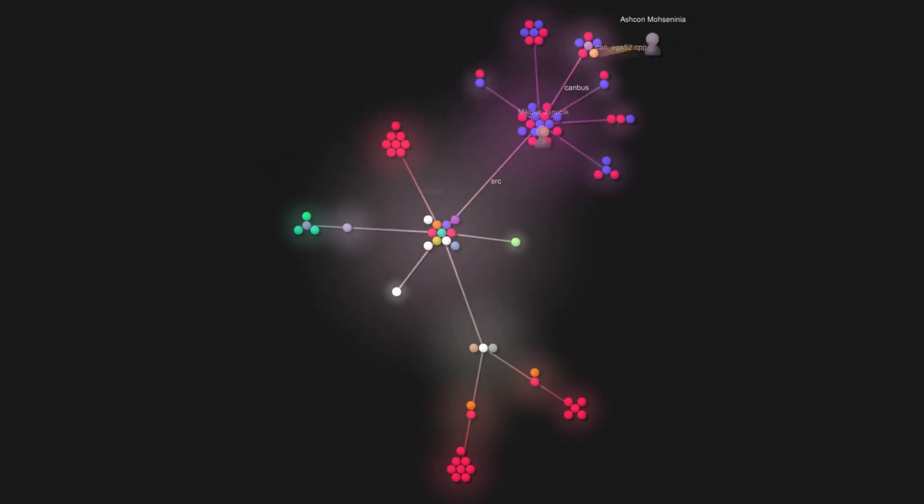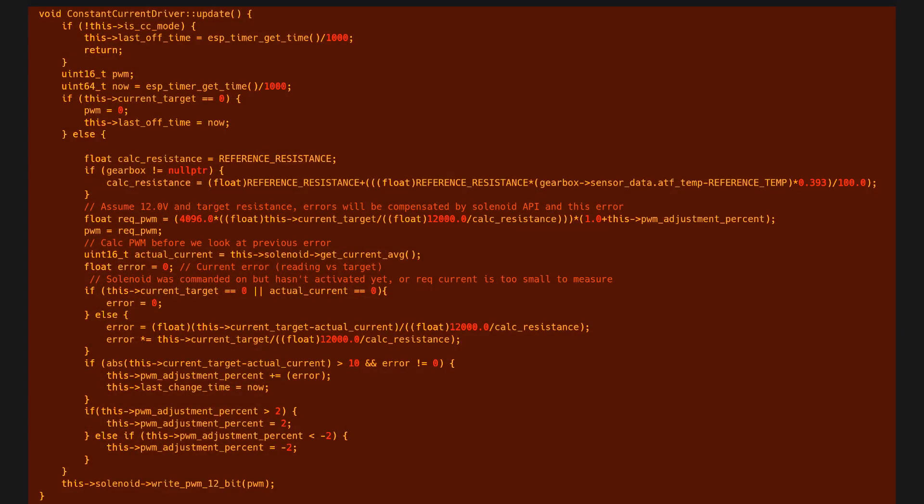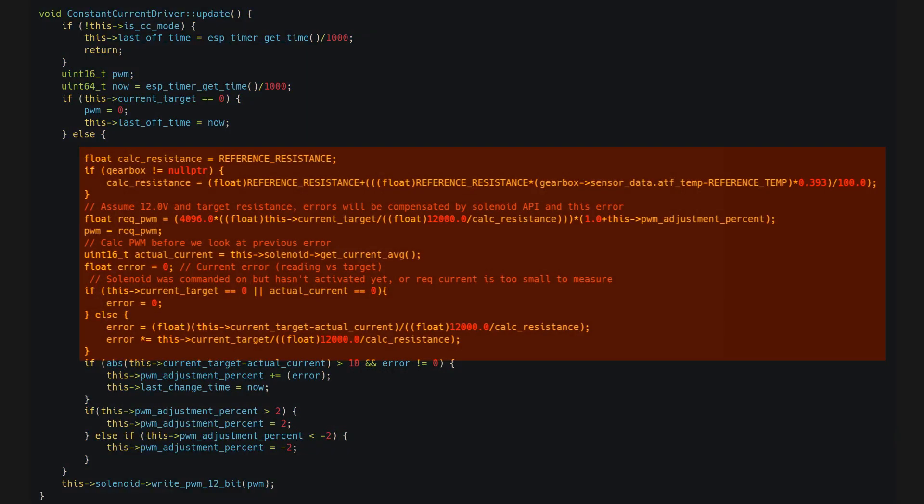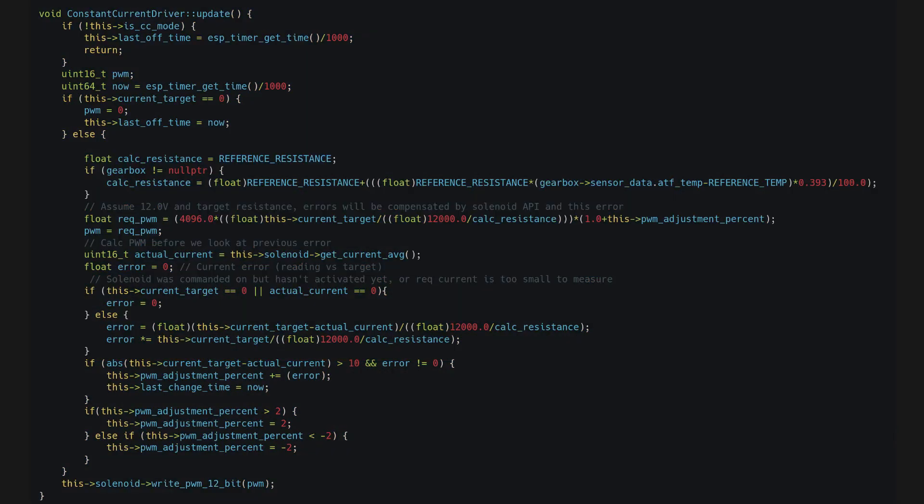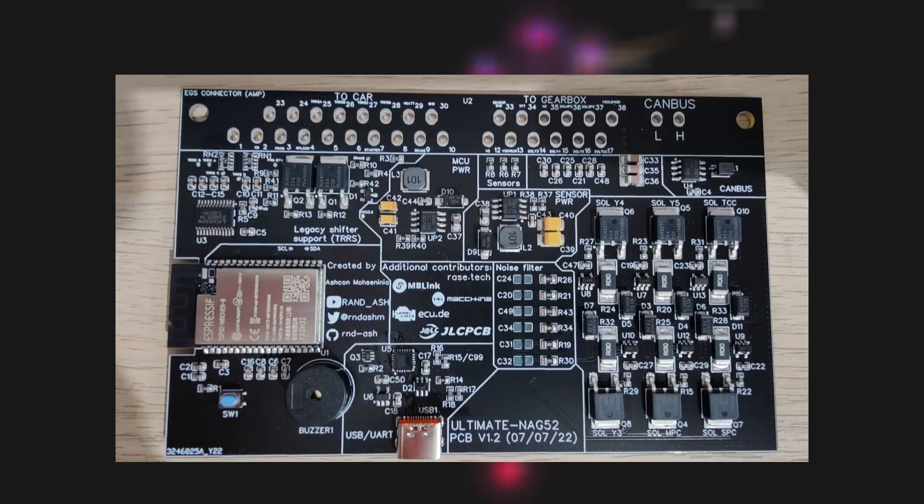In order for the TCU to work in current and not PWM, I created a constant current driver class. This class takes a solenoid to control, and the program can tell the driver how much current it wants the solenoid to consume, and the current driver class will try to keep the solenoid drawing the requested current by altering the PWM duty cycle of the solenoid every 5ms. This keeps the solenoid current constant, whilst accounting for voltage fluctuations in the car's power supply, resistance changes in the wires to the solenoids due to heat, and other external factors that will influence the current drawn.